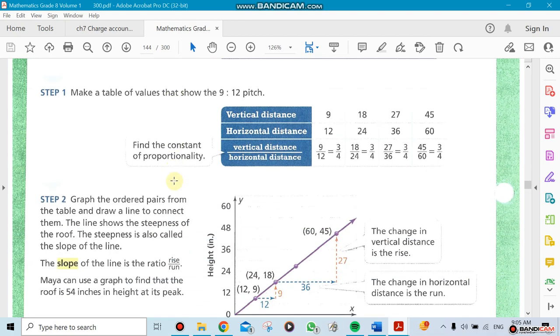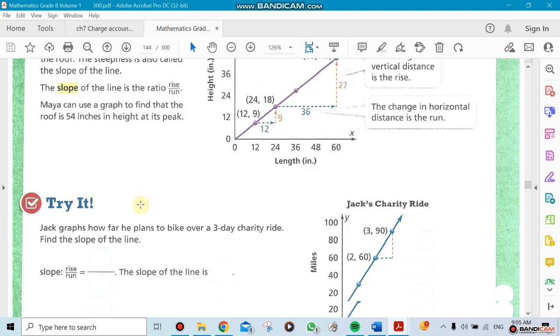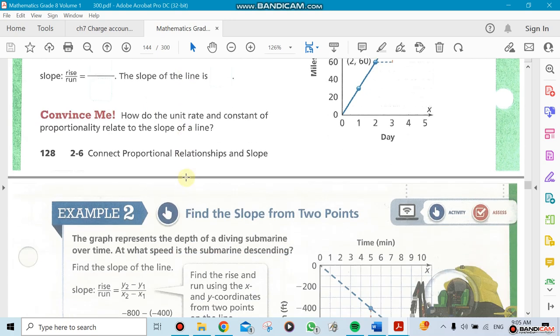We'll take this one in class, so nothing to worry about. There's an equation for it called rise over run. That means the change in the y value divided by the change in the x value gives you a slope. We'll do this in class.